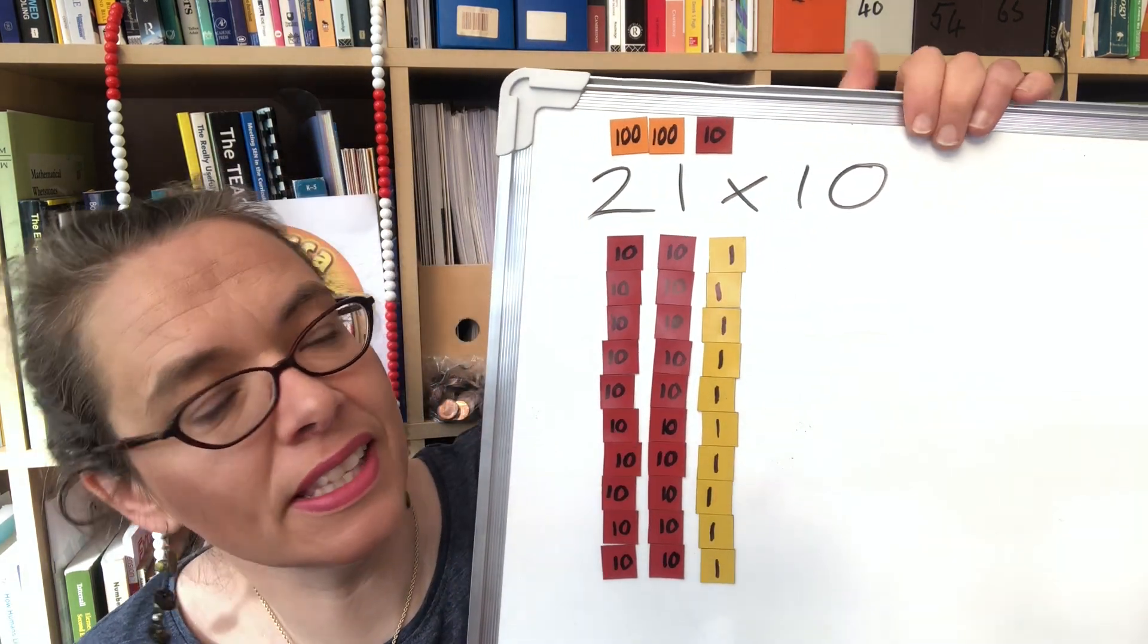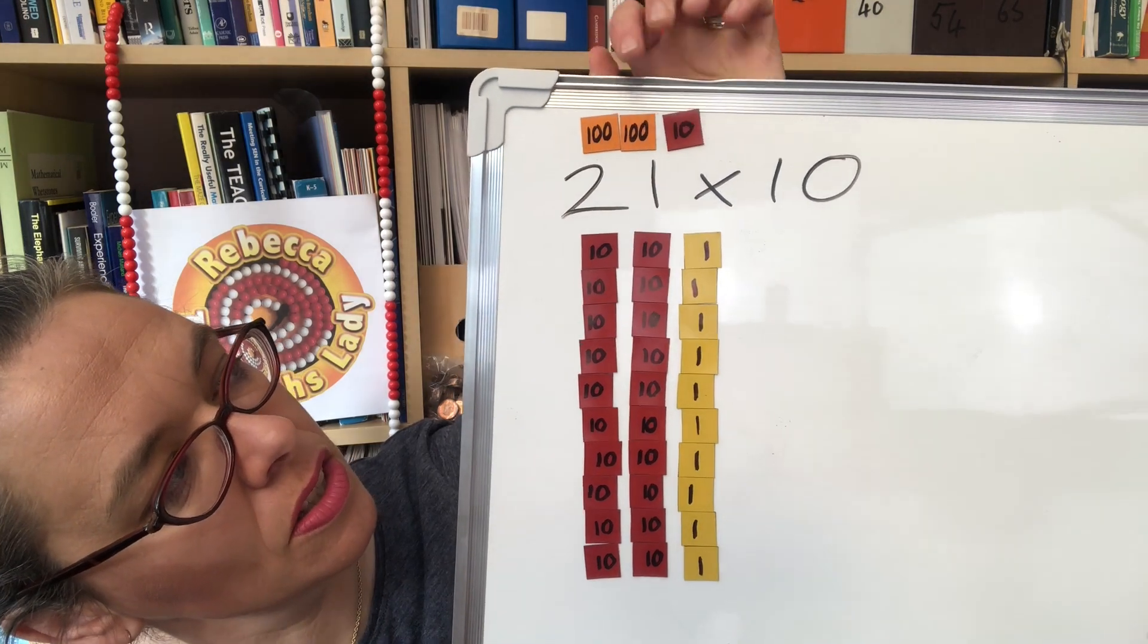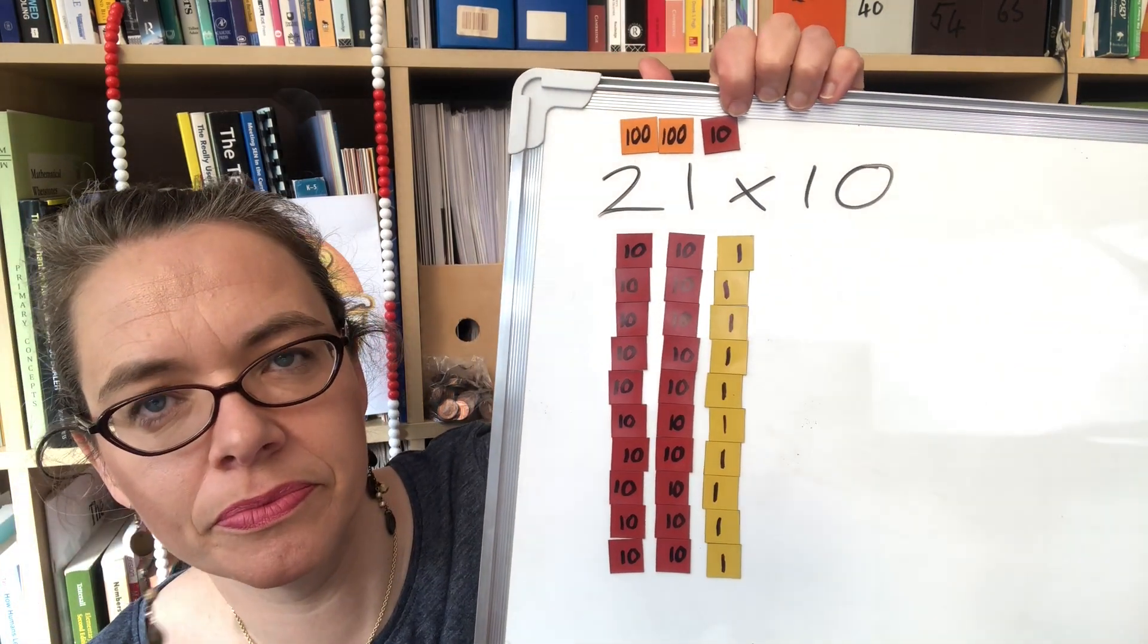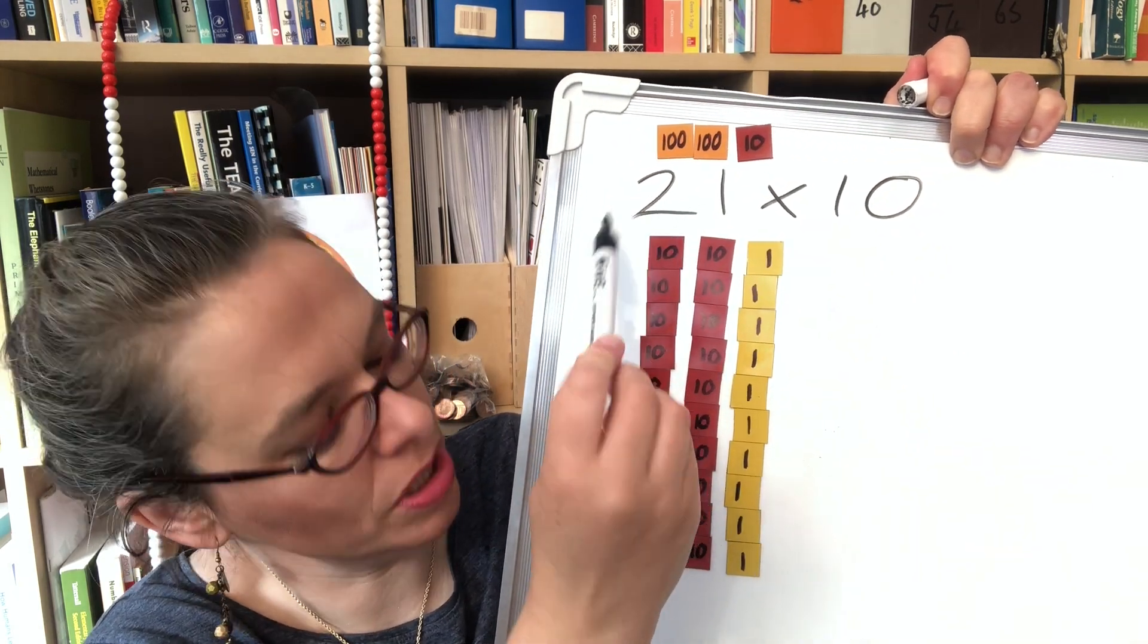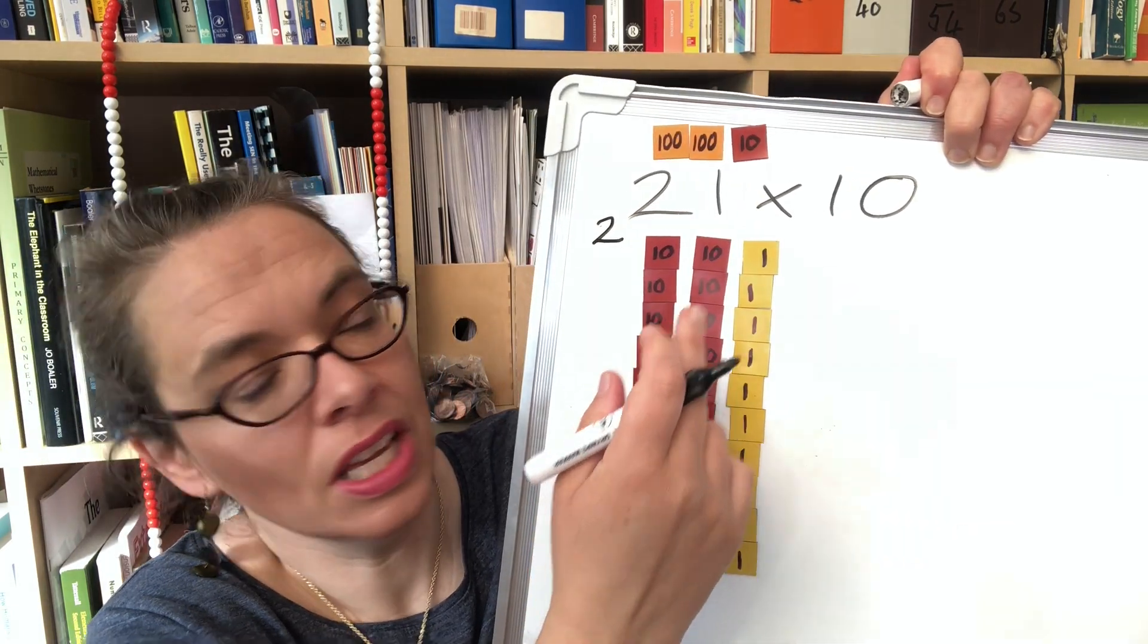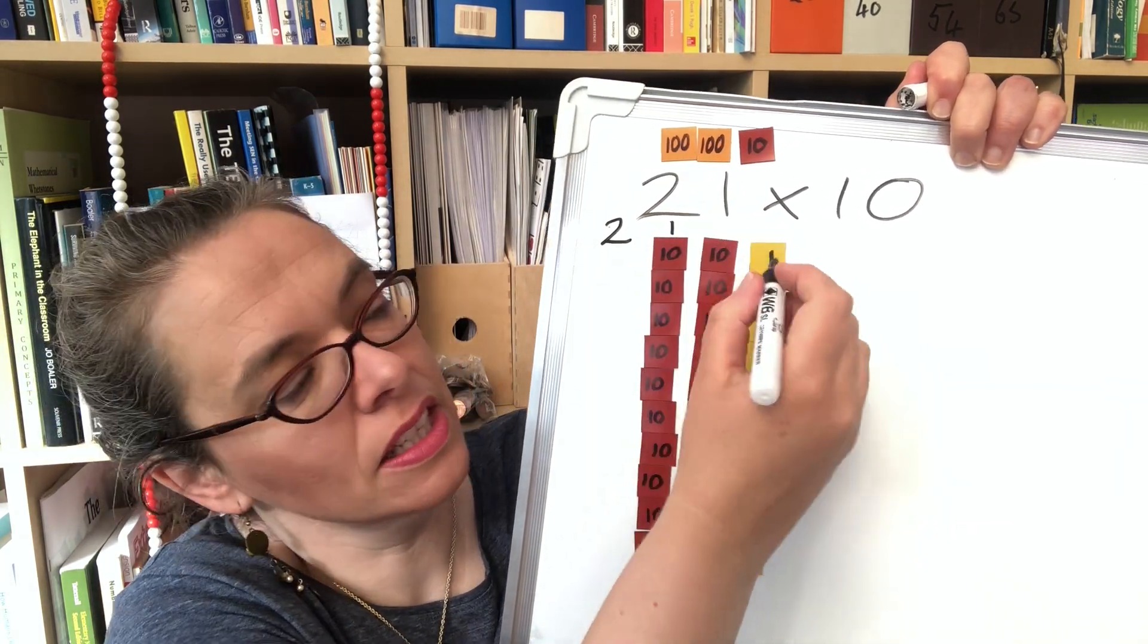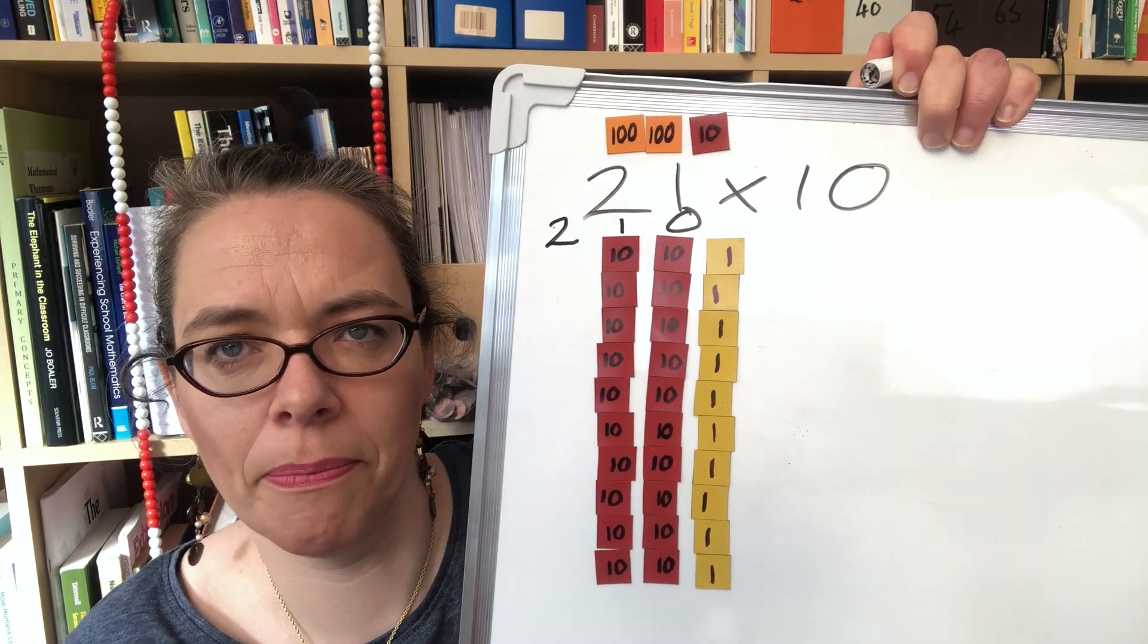So there we can see in place value counters that our answer is 210. What we start to see is that each 10 gives us a 100 so we're going to get two 100s. Each one gives us a 10 and we can see we're going to need to put a zero in there to make that number make sense.